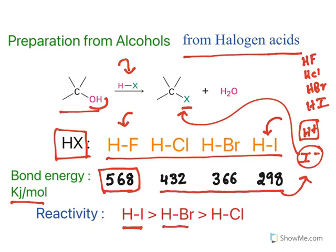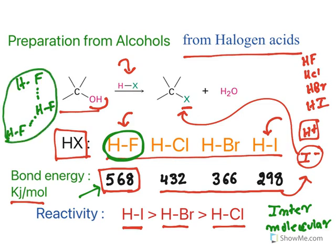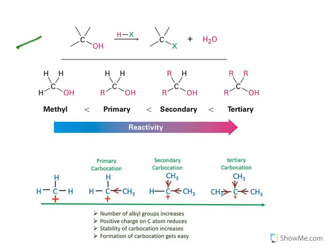HF is not usually used for two reasons: very high bond energy, and HF forms intermolecular hydrogen bonds with other HF molecules, further increasing bond strength, making it very difficult to generate fluoride anion. So HI, HBr, and HCl are used, but not HF.